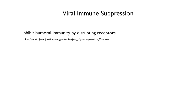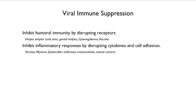Let's take a look at immune suppression. Herpes, cytomegalovirus, and vaccinia inhibit immunity in the blood by disrupting receptors. Vaccinia, myxoma, and Epstein-Barr virus — which causes mononucleosis and several cancers — inhibit inflammatory responses by disrupting signaling molecules and by changing the ability of cells to stick to each other.